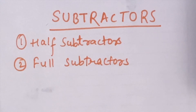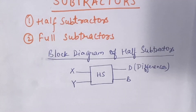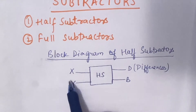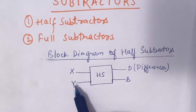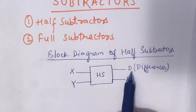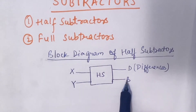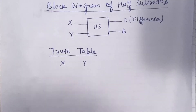Now let's check out the block diagram for the half subtractor. The block diagram consists of a square box labeled HS for half subtractor. X and Y are the two input numbers whose difference we have to find. D is the output representing the difference between X and Y, and B is the borrow — borrow is like the carry of the adder.